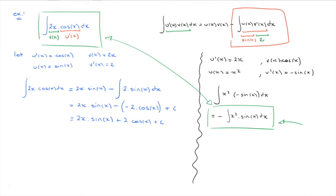Trial and error will lead you to the right answer. As a rule of thumb when doing integration by parts, consider that cosine of x can be differentiated again and again and will never vanish, whereas 2x only needs to be differentiated once to become just 2, which is easy to deal with. So you'll often want to call v(x) the function which disappears after a single differentiation — or sometimes two. That's often the way to go.